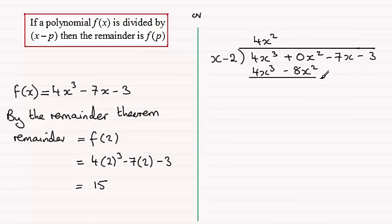And now we subtract to find out what the remainder is. So we've got 4x³ minus 4x³ is 0. 0x² minus minus 8x² is 8x². And then we bring down the next term minus 7x.